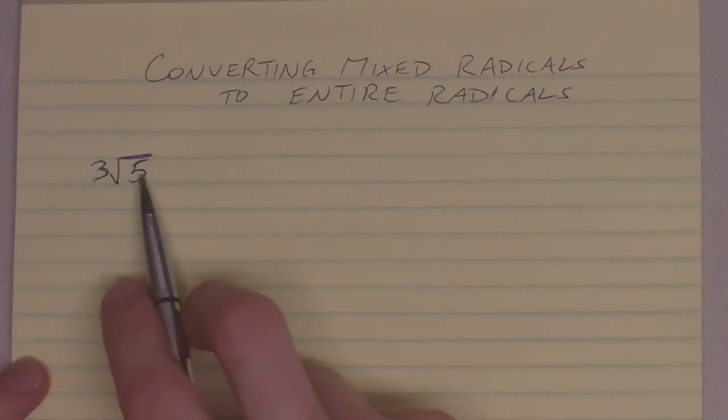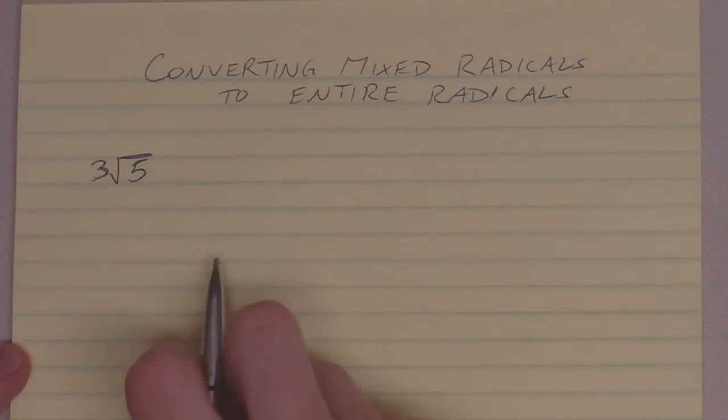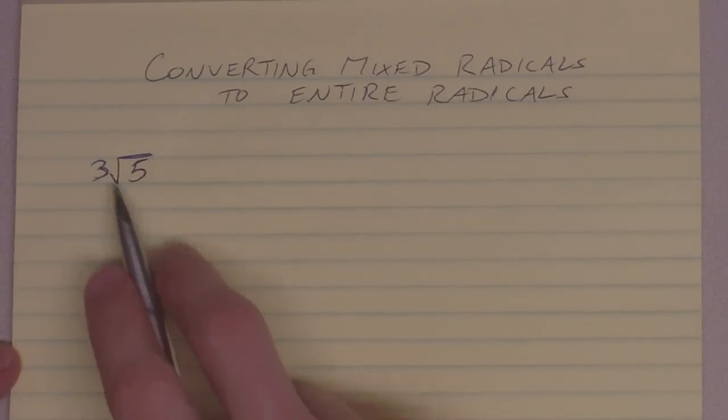So, let's start with a mixed radical, 3 root 5. How do we get that into an entire radical format? We want to make sure you get this 3 underneath the radical symbol so there are no coefficients out front. We have to do a little bit of trickery here in order to get that number back underneath. We've got to play around with that 3 a little bit.